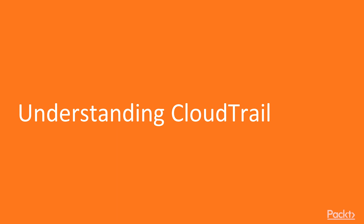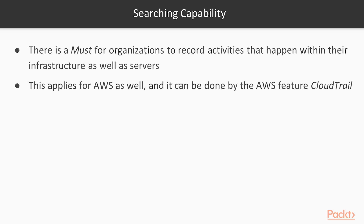Whenever you are using some kind of account — it can be a Linux server, it can be a cloud hosting provider — there must be a need to record all the activities happening within the infrastructure as well as within your server. If I want to see what user Alice did one week back on a specific server, I should be able to find the exact commands that have been executed. AWS provides us with a feature called CloudTrail which allows us to record each and every activity of an AWS account.